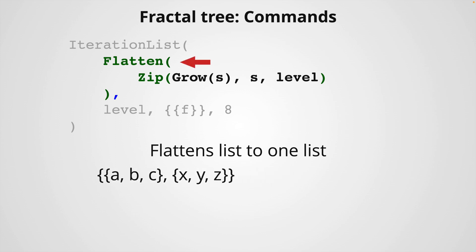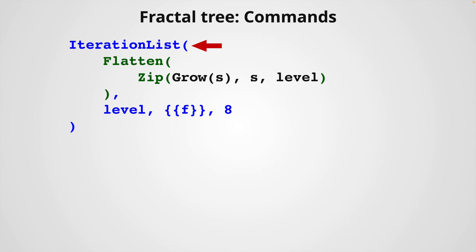Then the flatten command, as it says, it flattens the list to one single list. Finally, the iteration list command, we have to input our expression that defines the tree, the variable in this case is a list of branches, and we have to input the start value, in this case our original segment f, and finally the counts, that is the number of iterations.